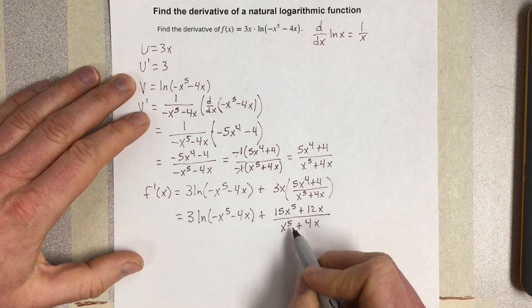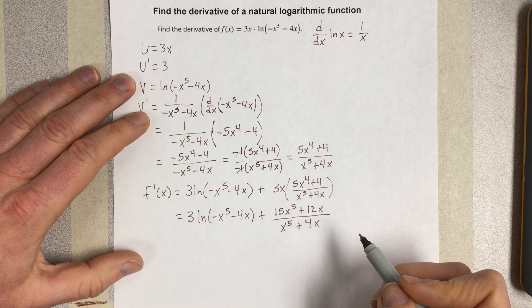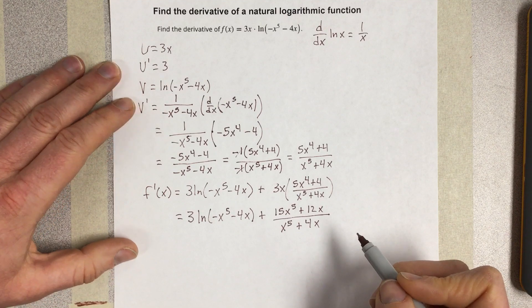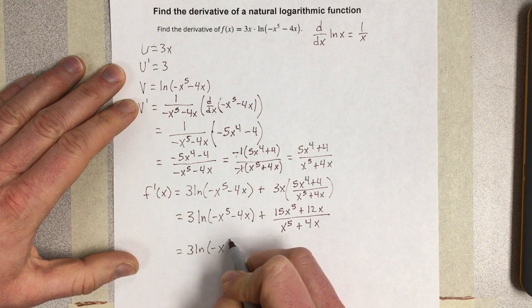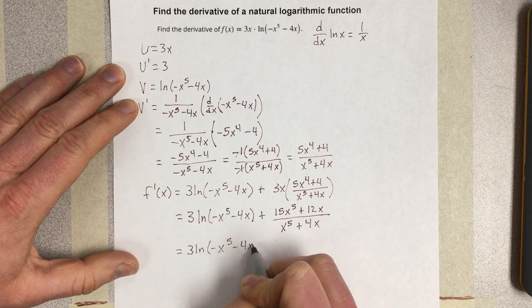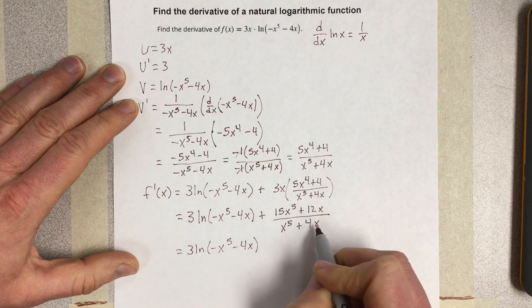I should have factored an x out, actually, because I can cancel one from each of these. So let's do that. That would equal 3 natural log of negative x to the 5th minus 4x. If I factor an x out of the top and an x out of the bottom, I get them to cancel.